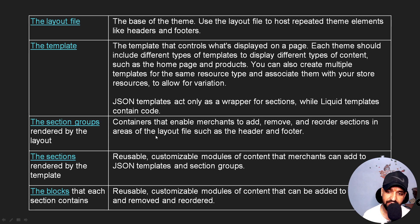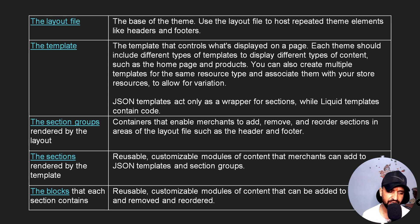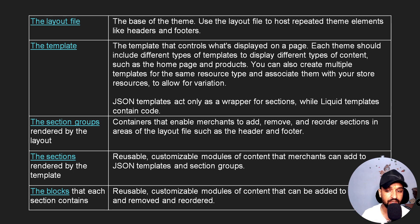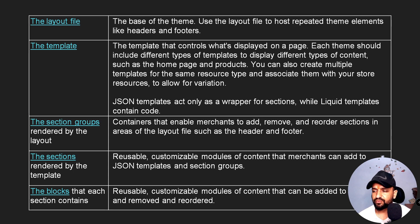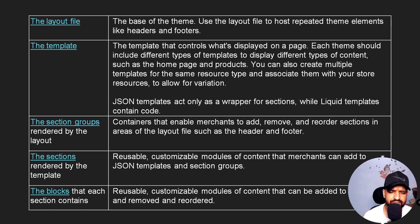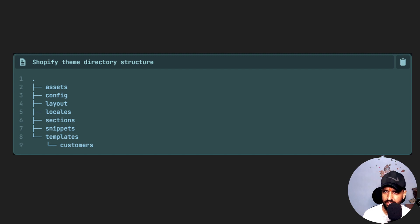Section groups are containers that enable merchants to add, remove, or reorder sections in specific areas — for example, a header group. Whatever you change in that particular group only affects that group, not the complete website. Sections are reusable, customizable modules used for some functionality. Blocks are reusable customizable modules of content that can be added to sections.